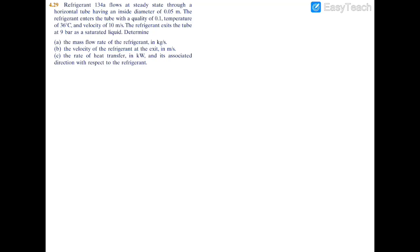In this example we're working with refrigerant 134A, also known as R134A, flowing through a horizontal pipe with an internal diameter of 0.05 meters. The refrigerant enters the tube with a quality of 0.1, so we're in a two-phase mixture closer to a saturated liquid than a saturated vapor. The temperature at the inlet is 36 degrees Celsius, and the velocity at the inlet is 10 meters per second.